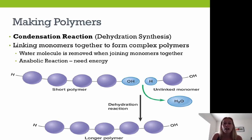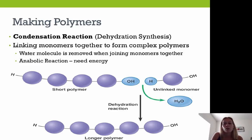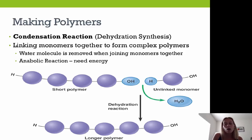So how do we make a polymer? We make a polymer through a condensation reaction, also referred to as dehydration synthesis. Either way, you're losing water in order to build a larger molecule. This is an anabolic reaction, which means it requires energy — just like building a Lego set or making a cake, you're using energy to put things together.